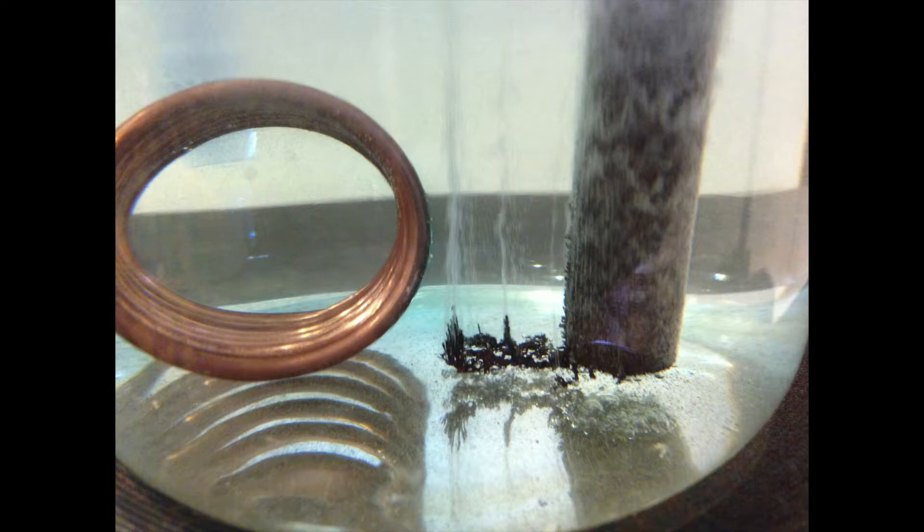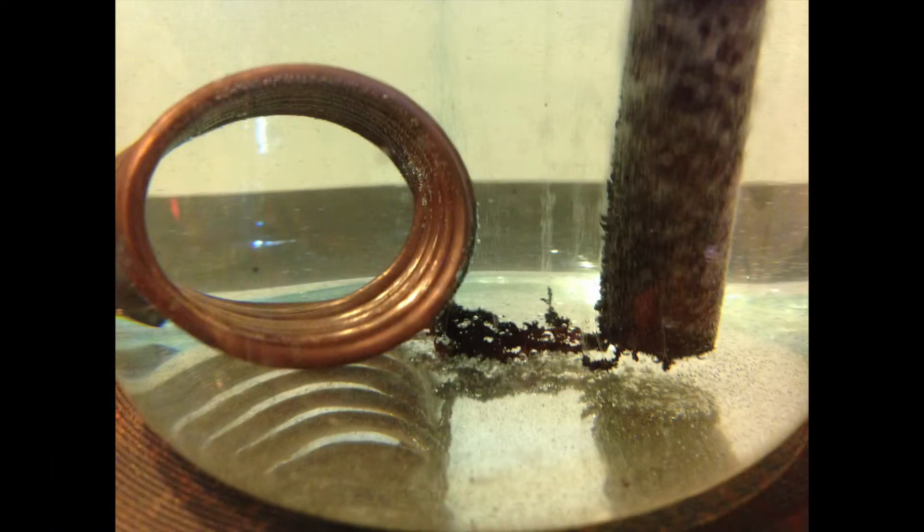When the dendrites make it to the other side, it's not that great for the reaction. What happens is the electric current is then just shorted through the dendrites, and we don't get so much of a chemical reaction anymore. It mostly just becomes a heater.